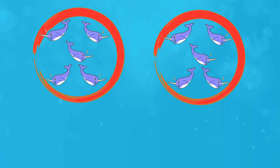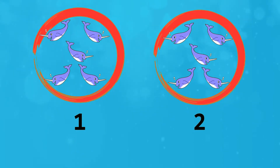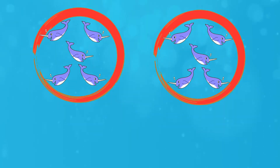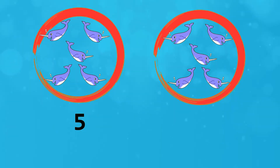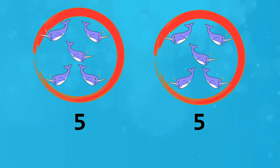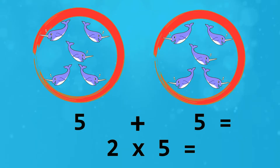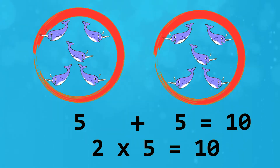How many groups? There are two groups. How many in each group? There are five in each group. How many all together? There are ten all together.